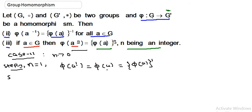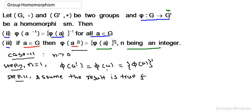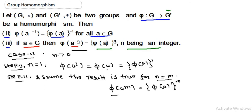Step 2 of induction: assume the result is true for n equals m, where m is a positive integer. That means phi(aᵐ) equals phi(a) whole to the power m. This is our induction hypothesis.